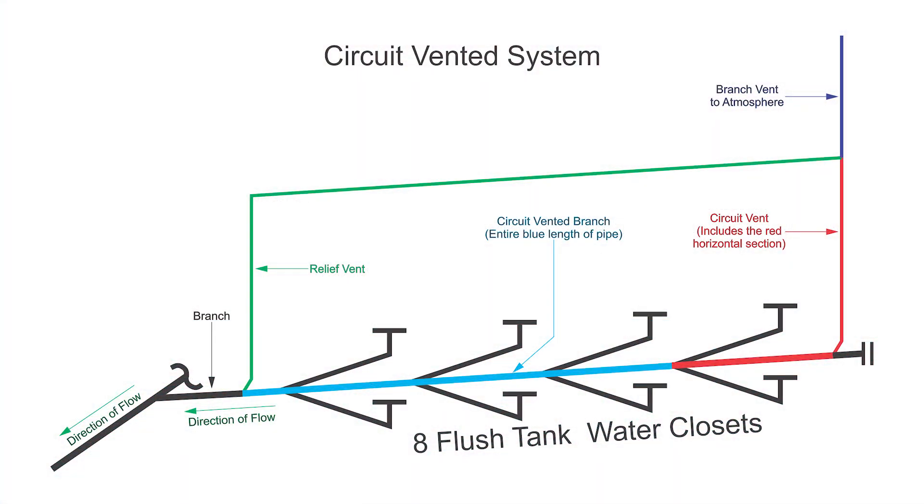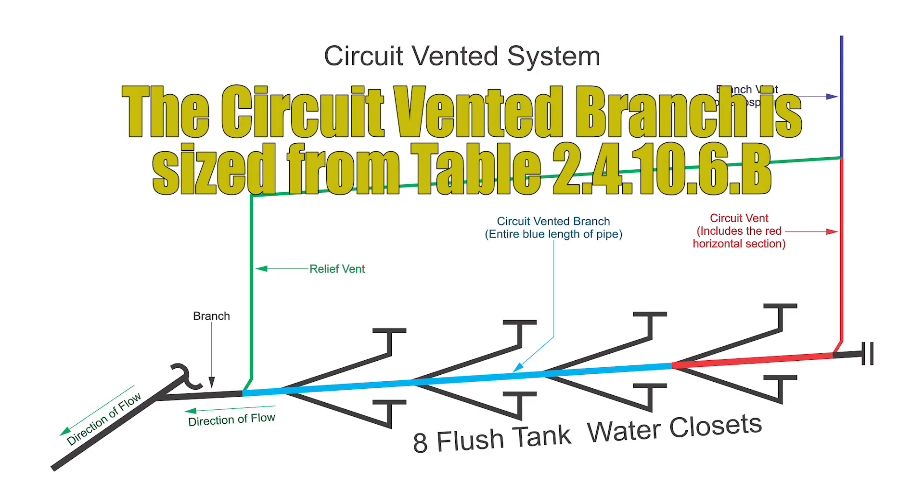Let's unpack this. First of all, the circuit vented branch, that is the drain pipe that goes between the relief vent and the circuit vent, shall be sized in accordance with Article 2-4-10-7. If you read that up, it's going to say it needs to be sized as a branch from the branch table, which is 2-4-10-6-B.